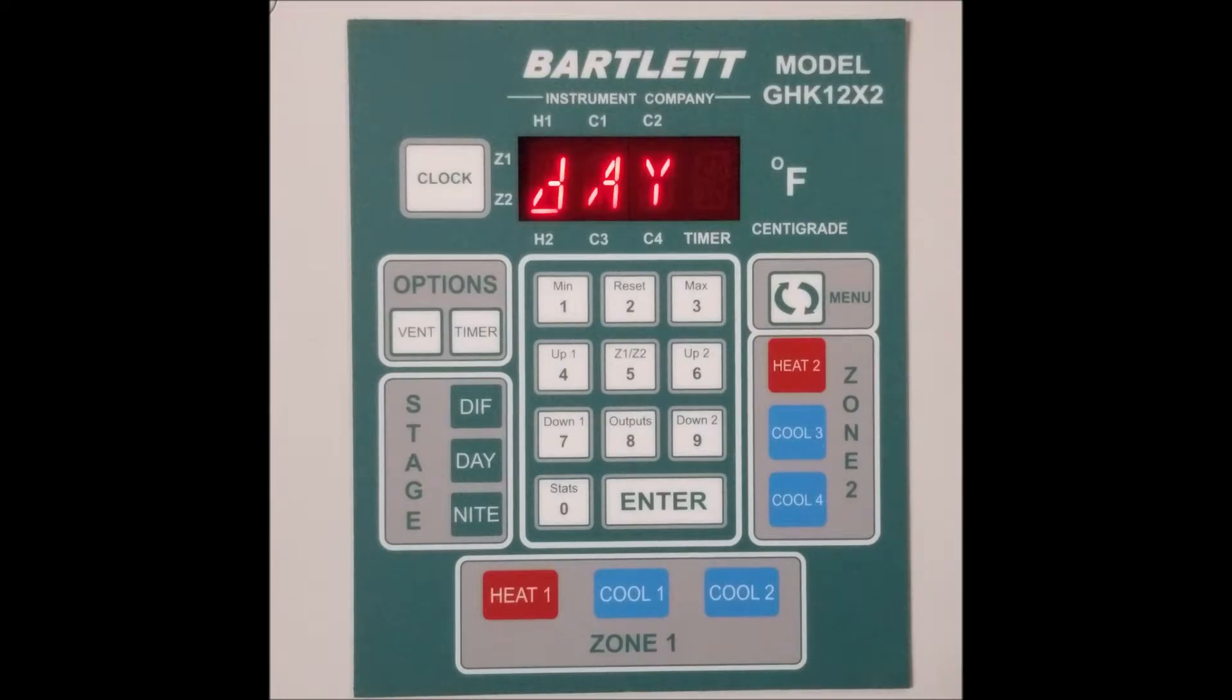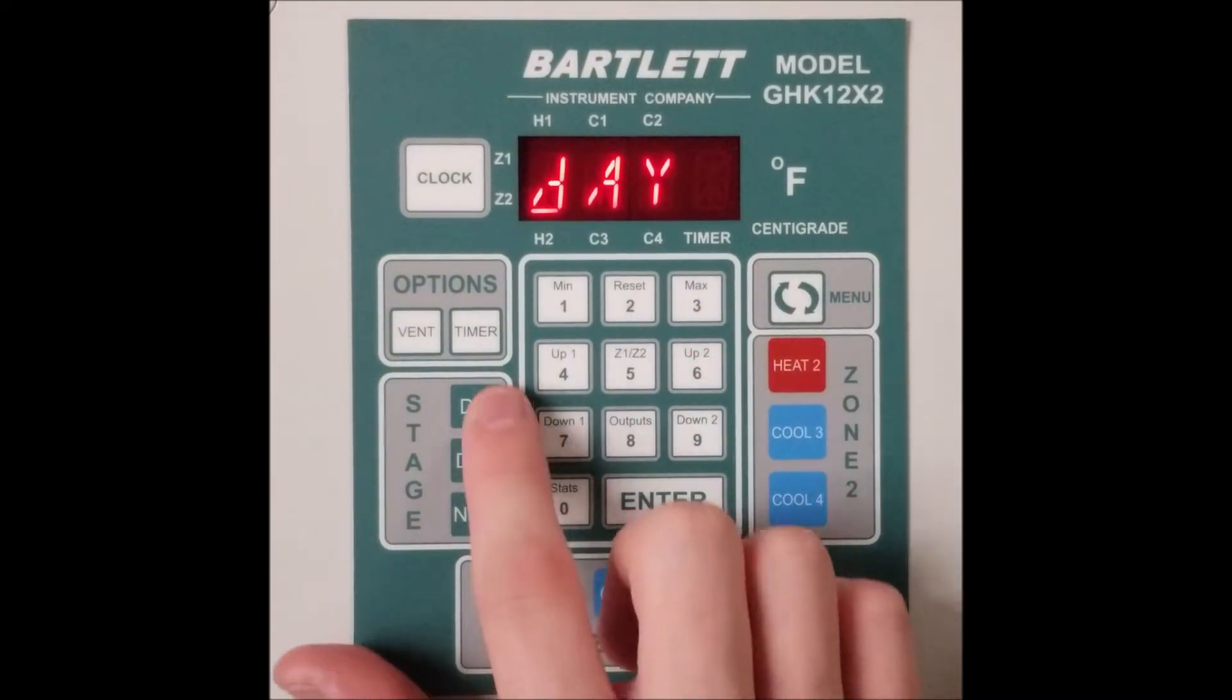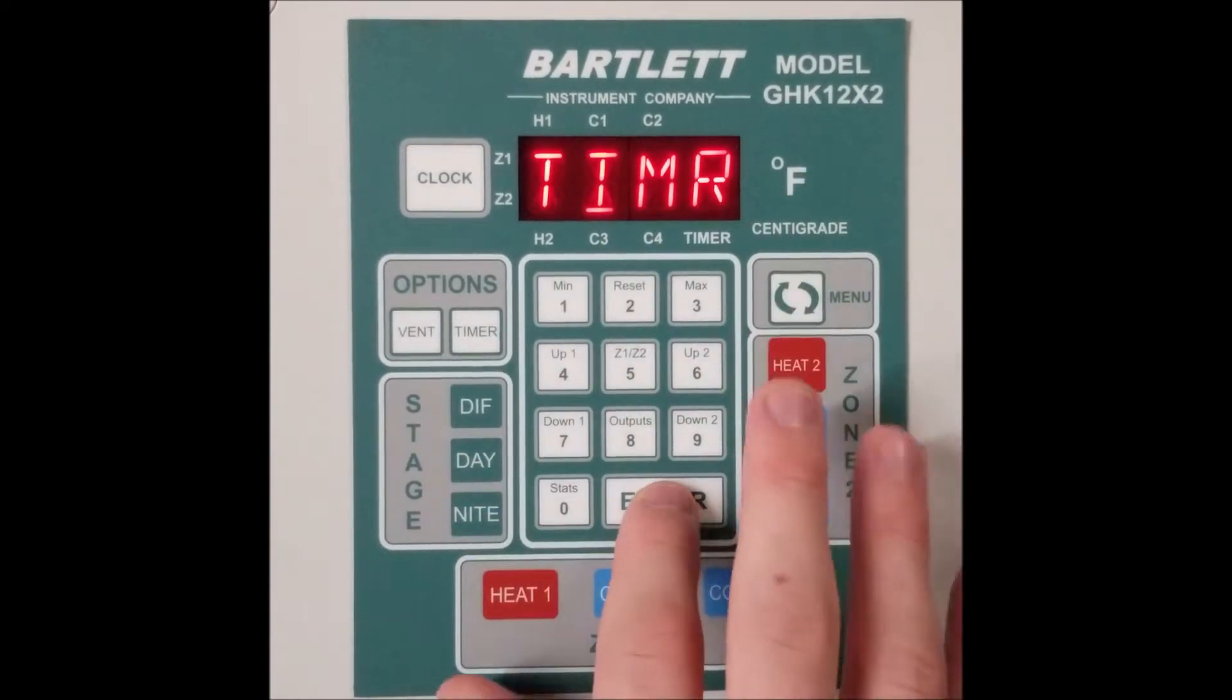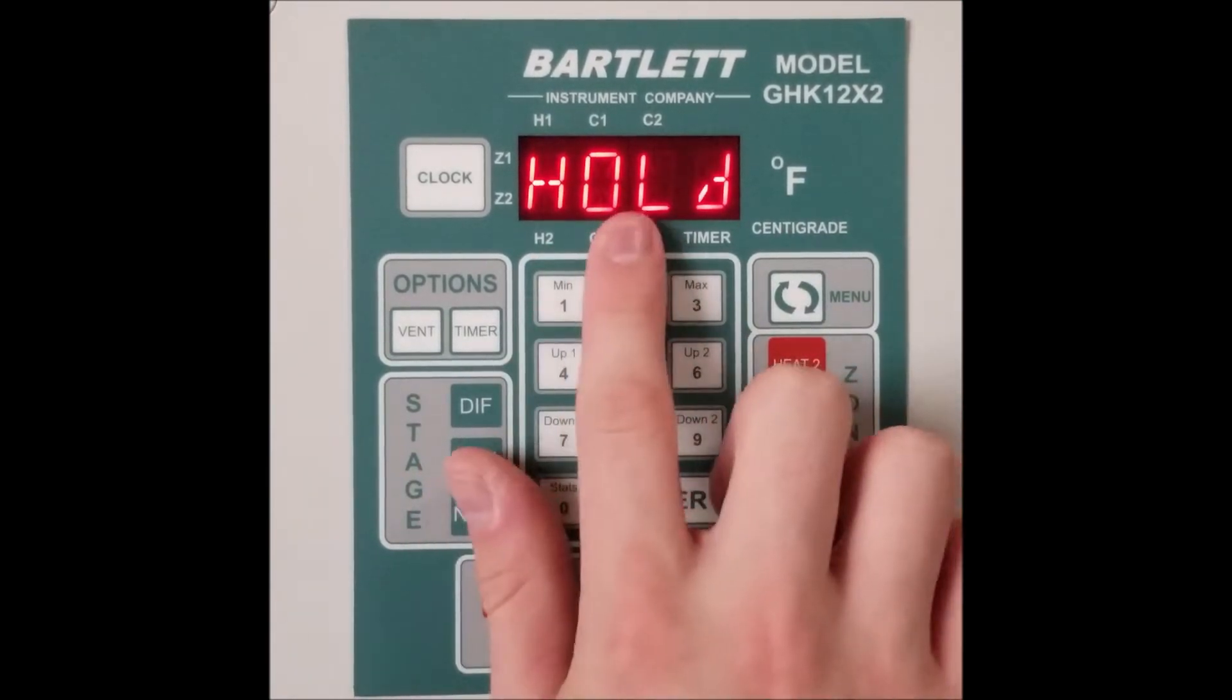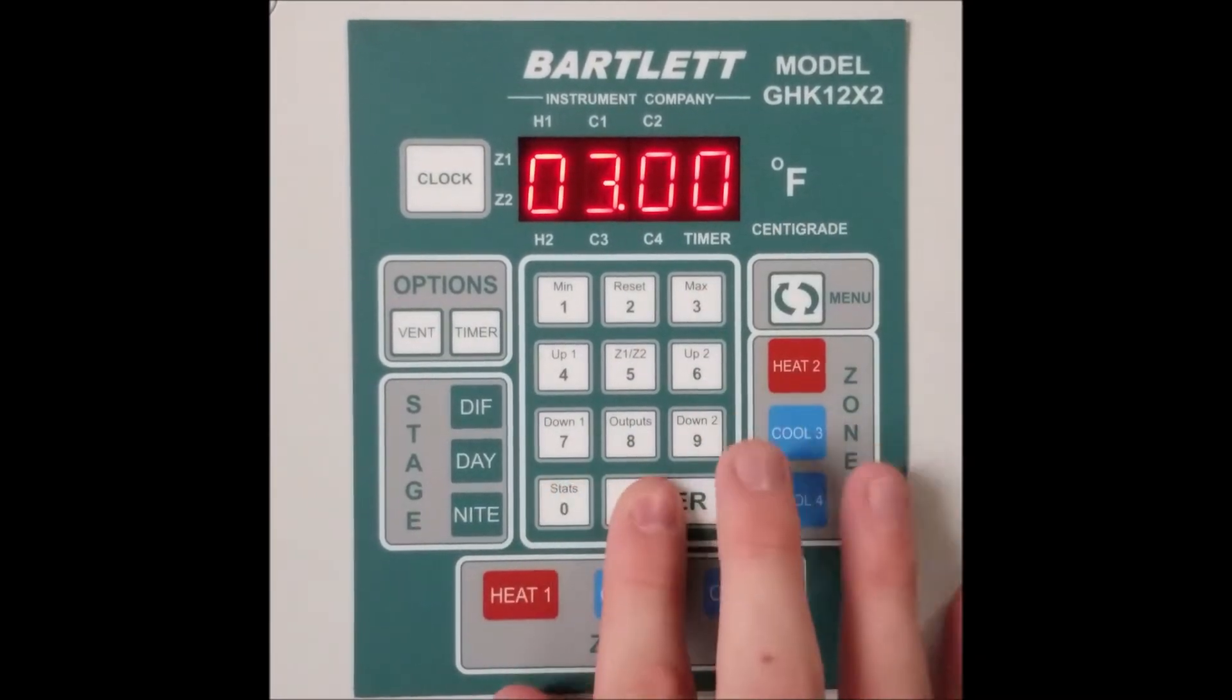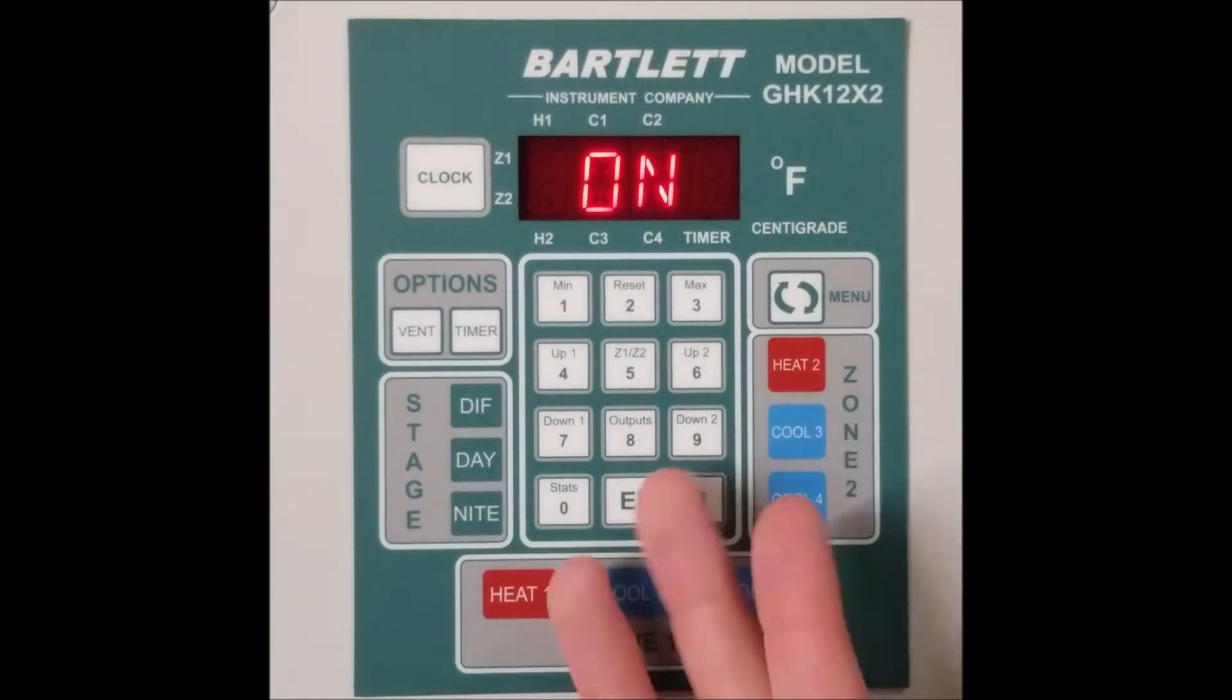Remember that you can always adjust this. Use this same process to adjust the timer at any point just by going back to timer, and then you can just press enter to bypass any other option you don't want. Say we wanted an extra hour hold, so we can edit that to 3, keep repeat for yes, and it's as easy as that.